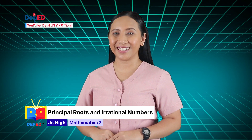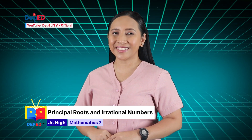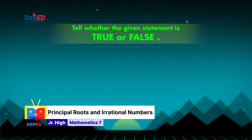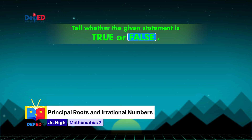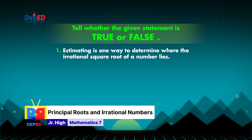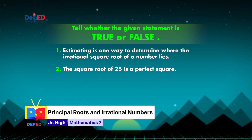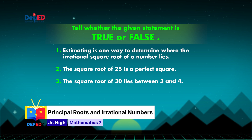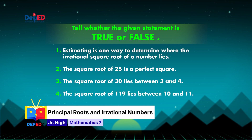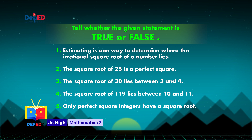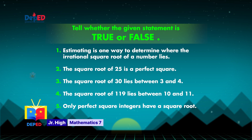Before we formally end our lesson, let us see how much you've learned today! Tell whether the given statement is true or false. Number 1: Estimating is one way to determine where the irrational square root of a number lies. Number 2: The square root of 25 is a perfect square. Number 3: The square root of 30 lies between 3 and 4. Number 4: The square root of 119 lies between 10 and 11. And number 5: Only perfect square integers have a square root. Timer!